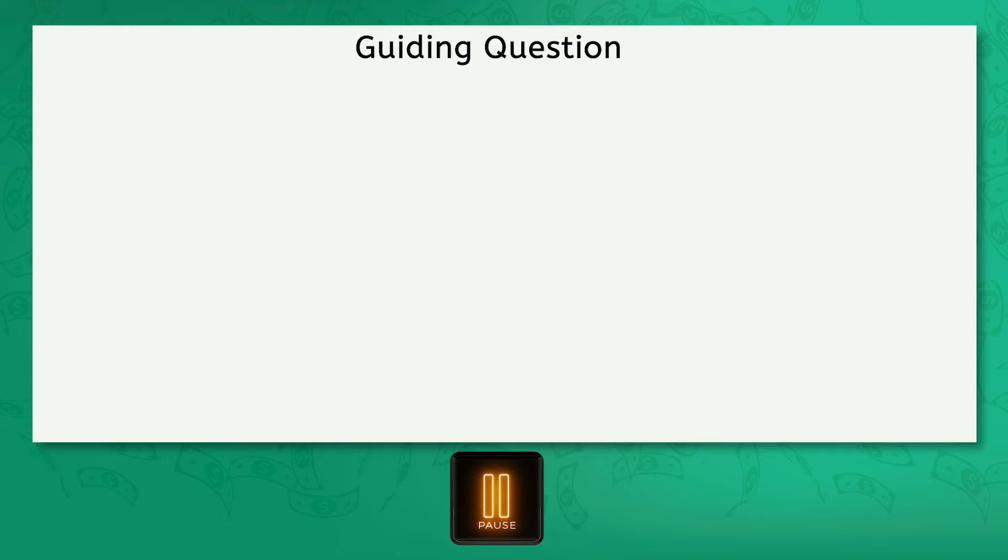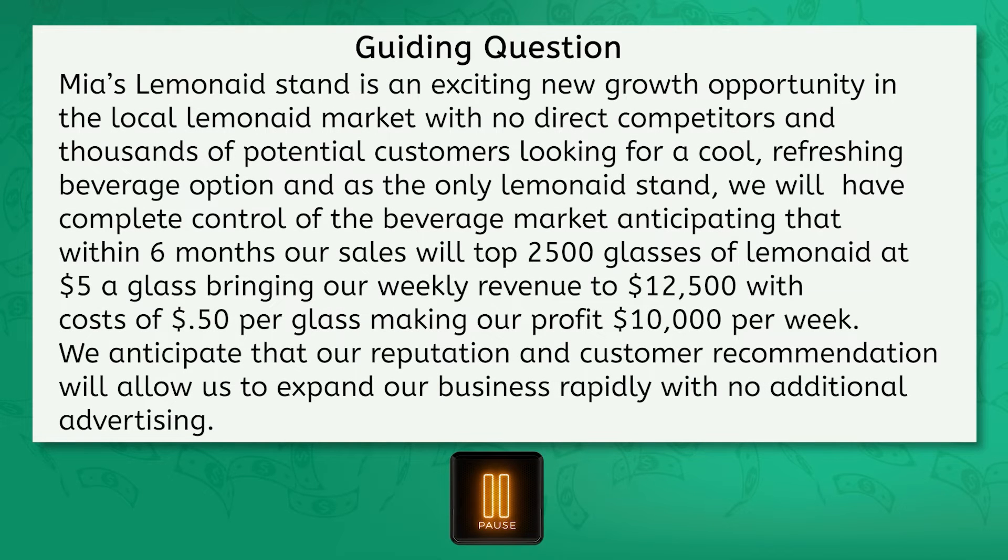Take a look at this section from Mia's business plan. Mia's Lemonade Stand is an exciting new growth opportunity in the local lemonade market, with no direct competitors and thousands of potential customers looking for a cool, refreshing beverage option. And as the only lemonade stand, we will have complete control of the beverage market, anticipating that within six months, our sales will top 2,500 glasses of lemonade at $5 a glass, bringing our weekly revenue to $12,500 with costs of 50 cents per glass, making our profit $10,000 per week. We anticipate that our reputation and customer recommendation will allow us to expand our business rapidly, with no additional advertising.